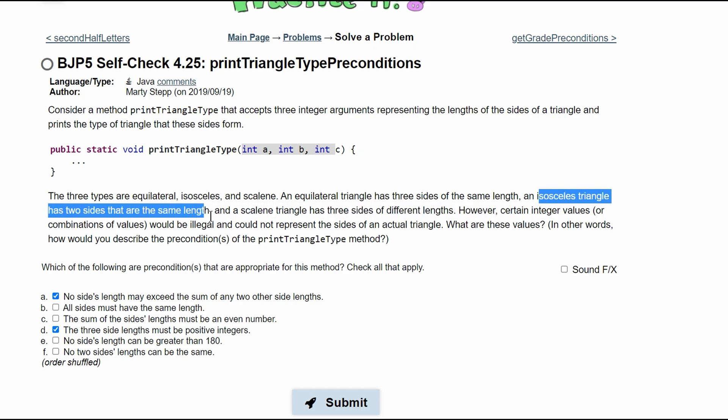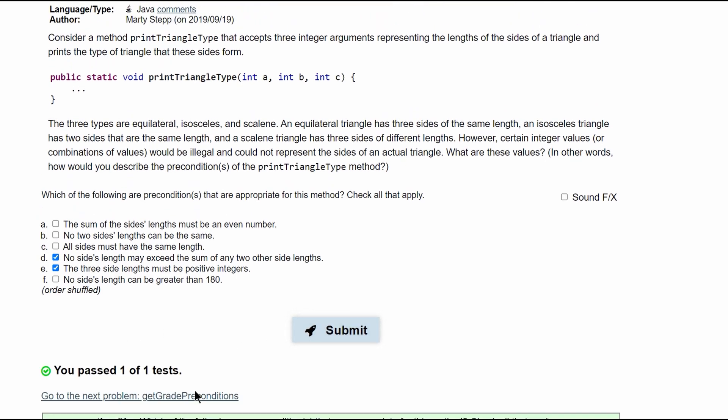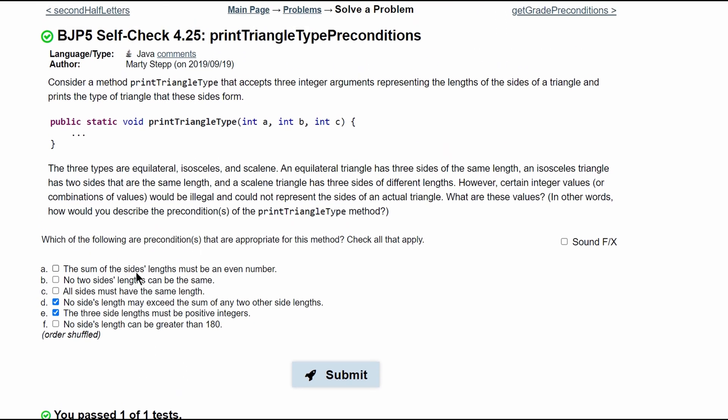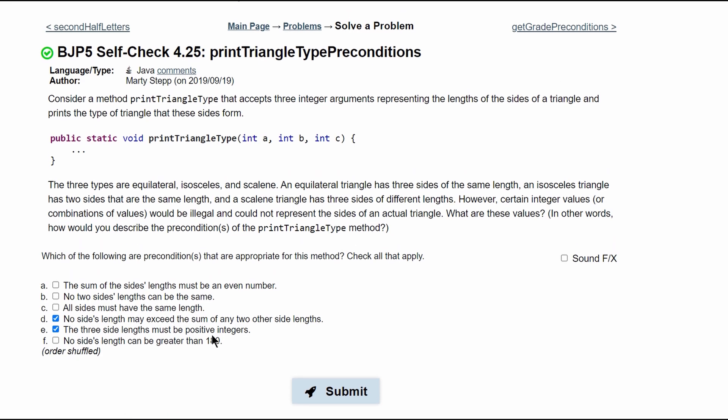So this is the condition for this. If we submit this, we can see that we have passed one out of one test, meaning that we have solved the answer for this problem. That for our preconditions, we know that no side lengths may exceed the sum of two other side lengths, and the three side lengths must be positive integers.